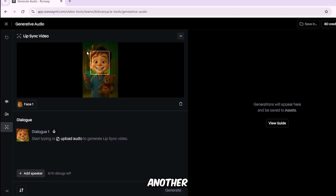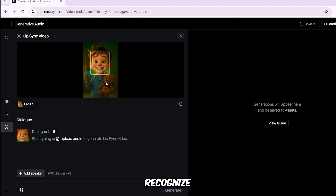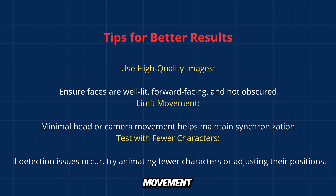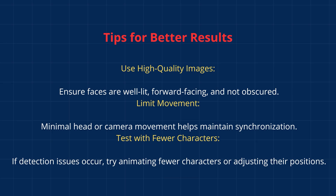So let's move on to another example. Look at this image of Liam and his teddy bear. The tool works best with clear, forward-facing human faces, and was unable to recognize the teddy bear's face. Tips for better results: use high-quality images, ensure faces are well-lit, forward-facing, and not obscured. Limit movement — minimal head or camera movement helps maintain synchronization. Test with fewer characters; if detection issues occur, try animating fewer characters or adjusting their positions.